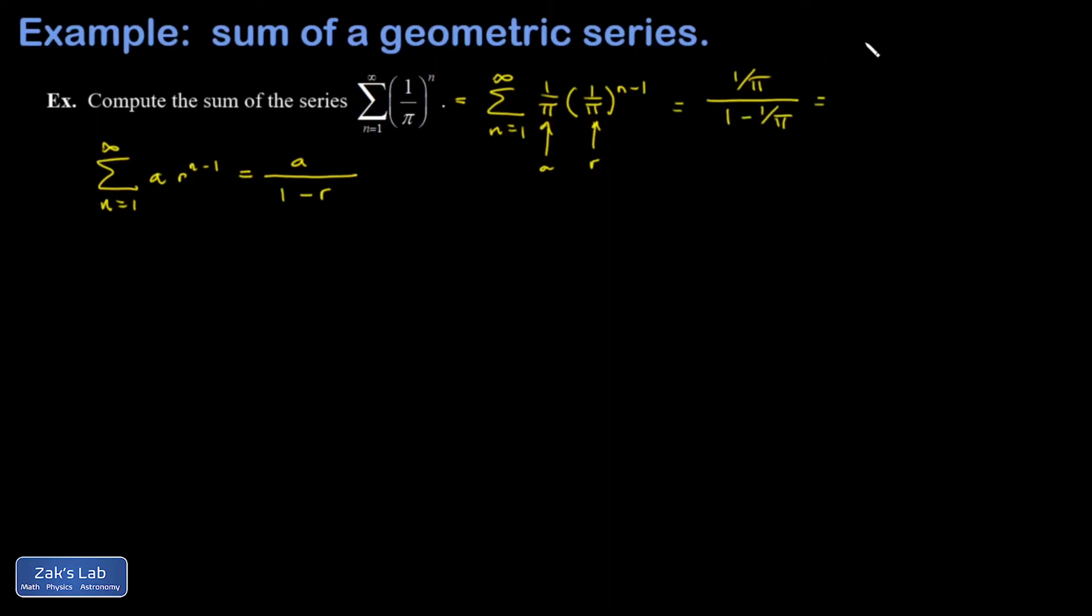We should probably take the opportunity to clean it up so I multiply the top and bottom by pi and I get 1 over pi minus 1.